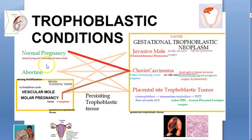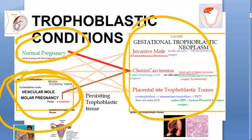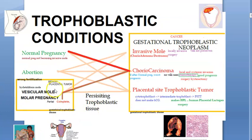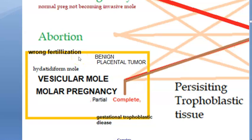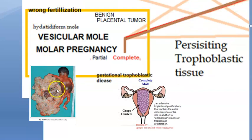To summarize: a normal pregnancy or a molar pregnancy can have a placenta, and these placentas can become tumors — benign tumors or cancerous ones. A benign placental tumor occurs when there is a wrong fertilization. When there is wrong fertilization, the pregnancy will not survive normally.